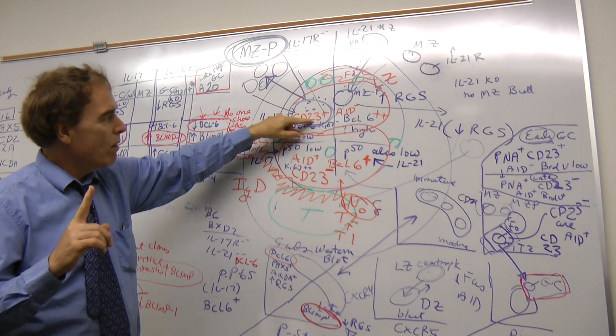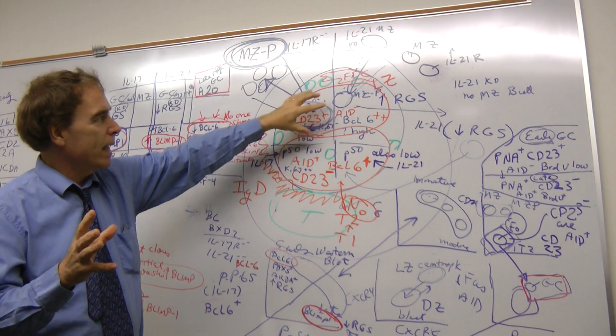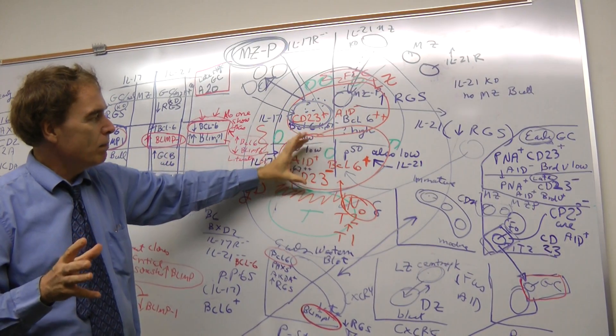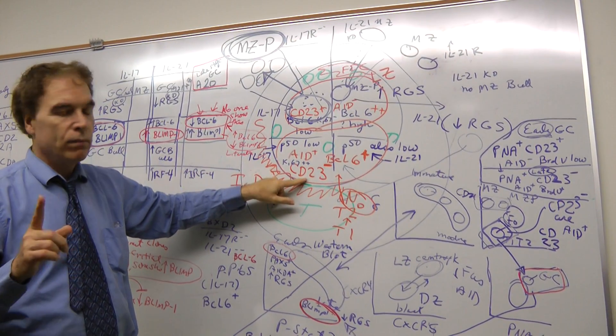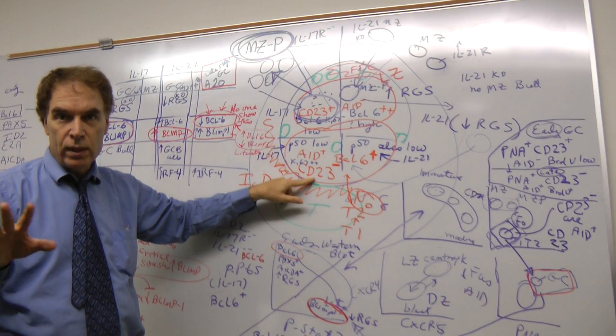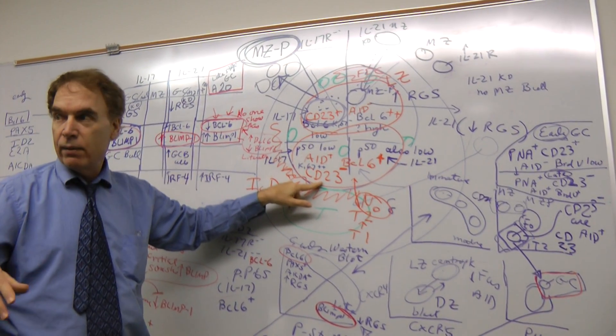And then they go from there, after they undergo, I guess, interaction with their antigen, they come to the dark zone and then they downregulate CD23. We're not sure what it is, but there is a factor for that. There is a factor that somebody found for that.